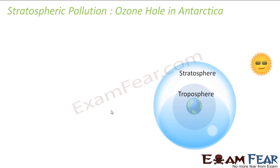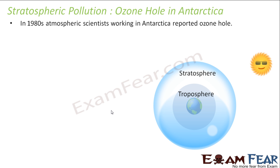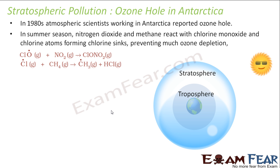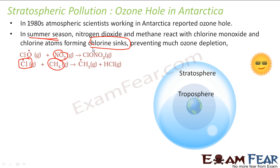Researchers did some work in Antarctica and found a seasonal pattern in the size of the ozone hole. In summer, nitrogen dioxide and methane react with chlorine monoxide (ClO•) and chlorine atoms (Cl•), forming chlorine sinks. So in summer, methane and nitrogen oxides act as sinks for the chlorine free radical, removing it. With less chlorine free radical available, ozone depletion slows down in summer.